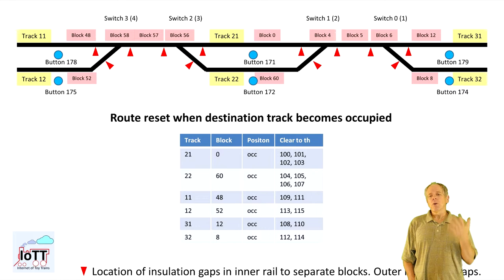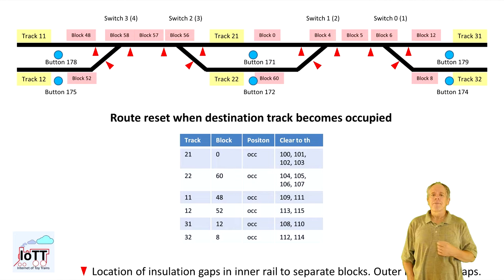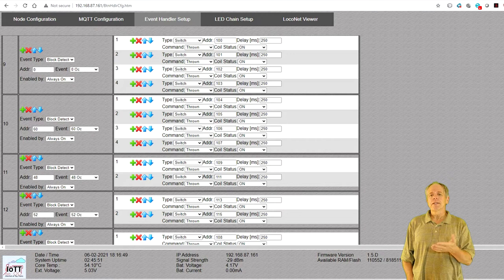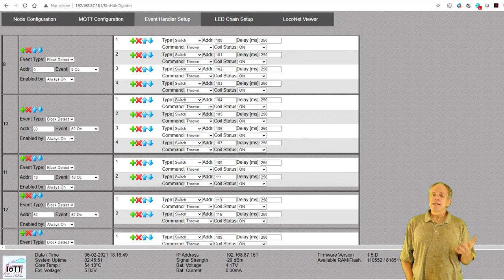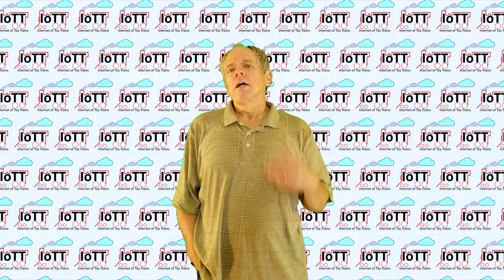The train movement watcher works similarly — it clears the route when the block detector of the destination track shows occupied. For the routes I have a total of six destination tracks. For each track I can list the routes that lead to that destination. So I create six more event handlers that monitor the block detector of each block and change the route switch to thrown, indicating the train has arrived and the route can be cleared. I create the first one, copy it five times, and change the addresses.